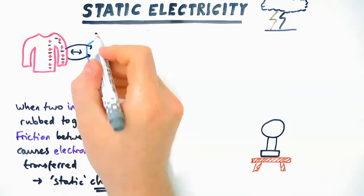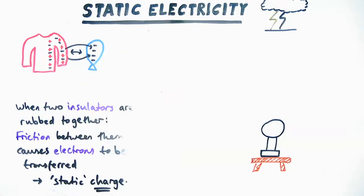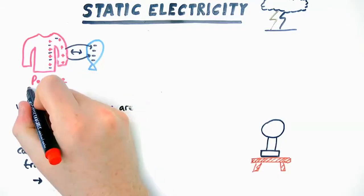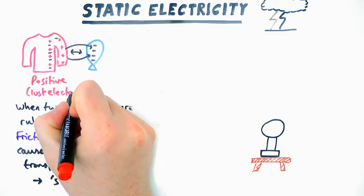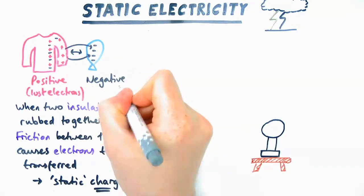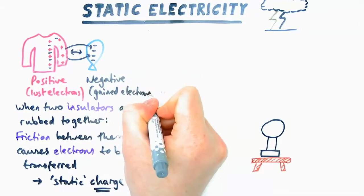But when you rub them together, some of the electrons will be transferred from one object to the other. So let's say here from the jumper to the balloon. Now, what that means is that the jumper will now have a small positive charge because it's lost some negative electrons, and the balloon will have a negative charge because it's gained some electrons.